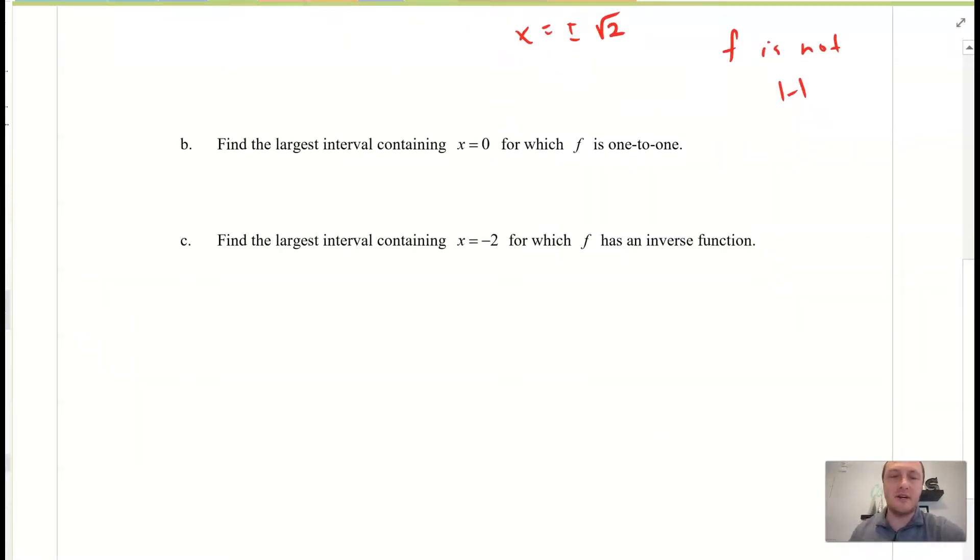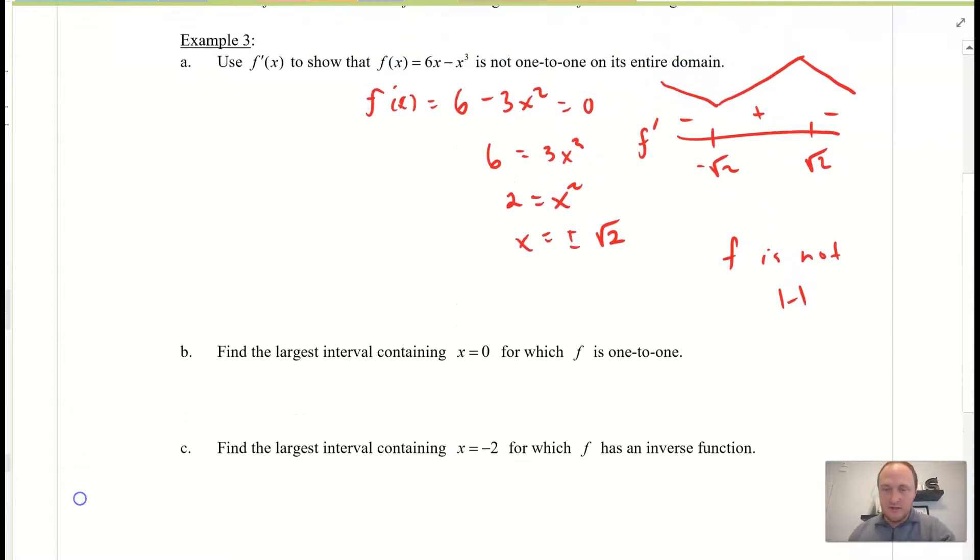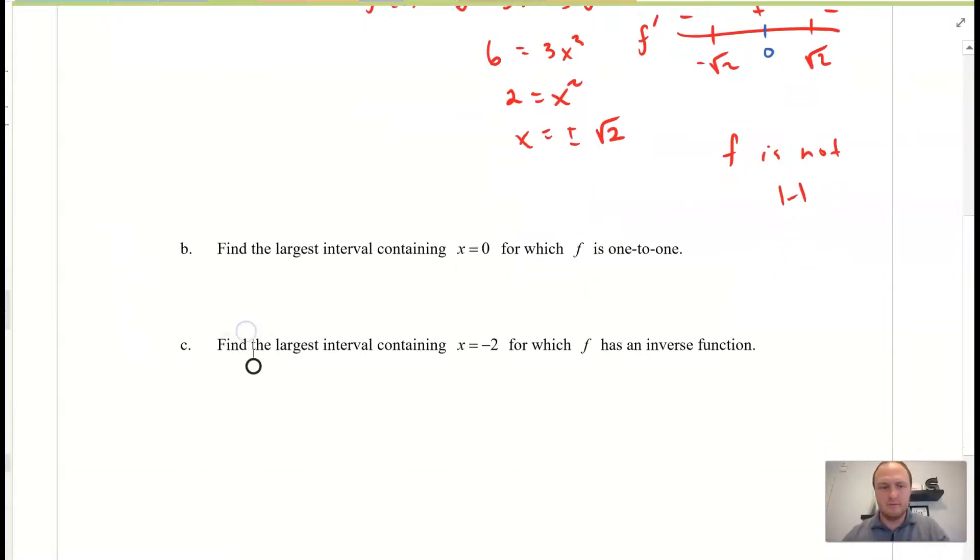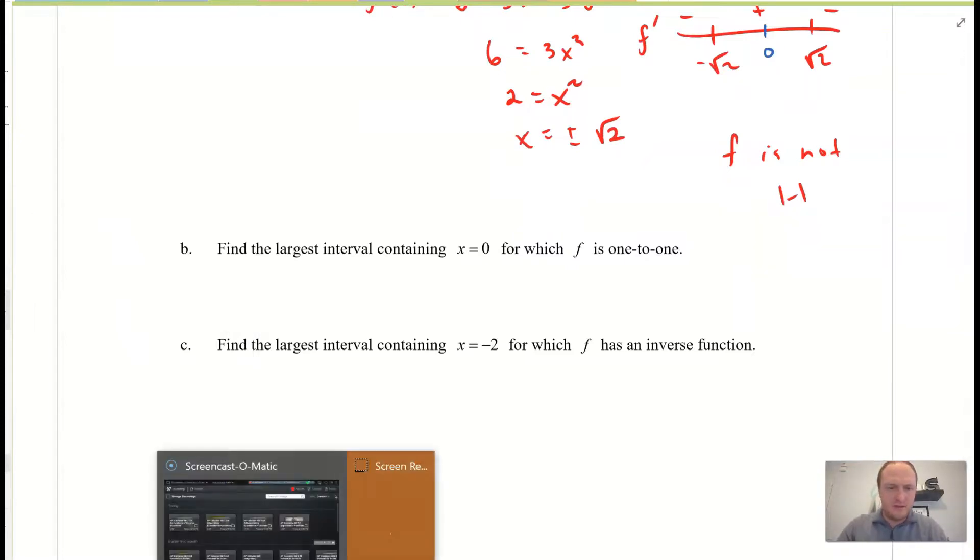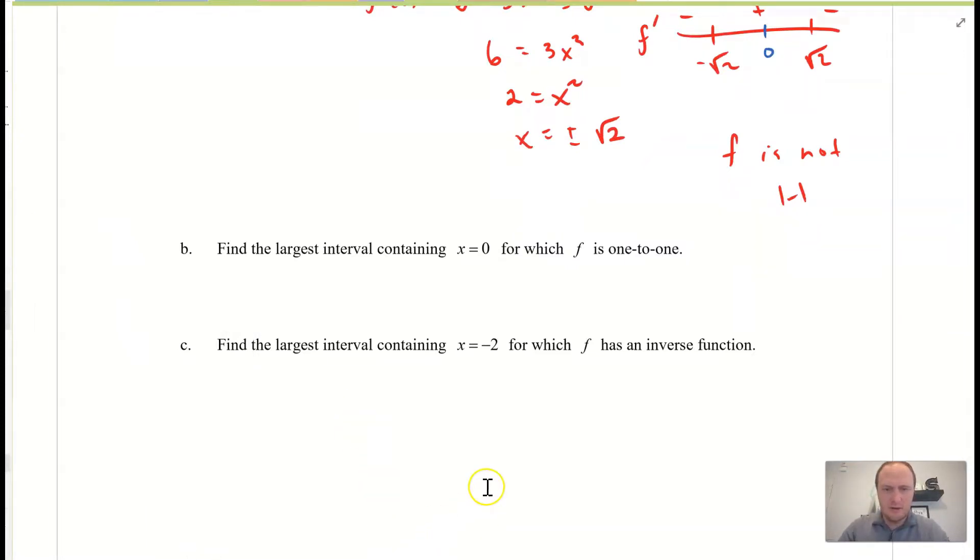So, part B, it says, find the largest interval containing x equals 0 for which f is 1 to 1. So, on this interval, where is 0? Well, 0 is going to be right here. Okay. Okay. So, thus, that is negative root 2 to root 2. Okay.